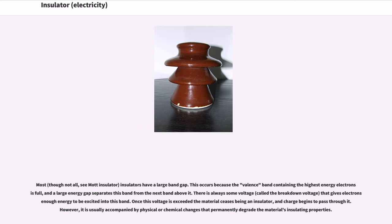For most, though not all, insulators have a large band gap. This occurs because the valence band containing the highest energy electrons is full, and a large energy gap separates this band from the next band above it.